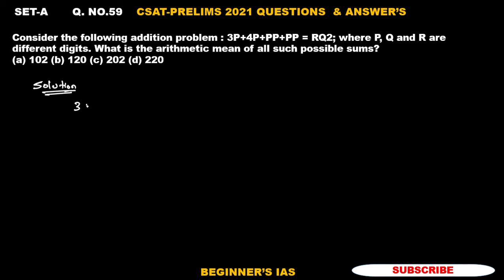method is write like this: 3P, then 4P, PP, PP by RQ2. Now listen carefully. After substituting the value of P, the unit place should be 2. Here 4P is there. 4P which is equal to 4 into P. If you multiply 4 with P, the unit place should be 2.